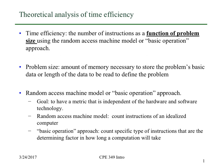Typically, we measure time efficiency in terms of the number of instructions as a function of the problem size, using either the random access machine model or some basic operation like comparison and how many times that's done. The basic operation approach is a handy one — it captures the essence of how long the algorithm is going to take on large-sized problems.